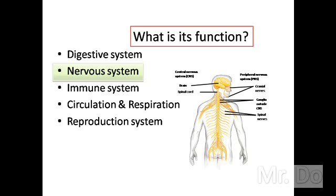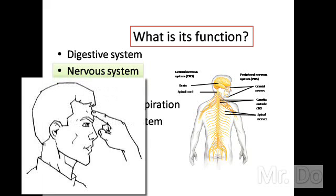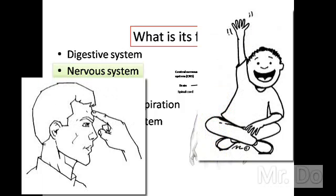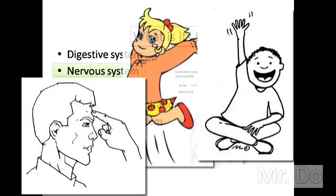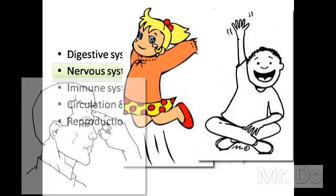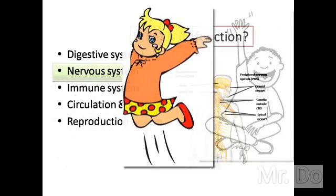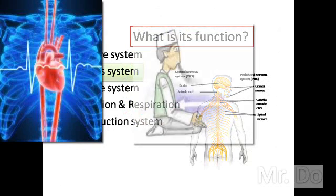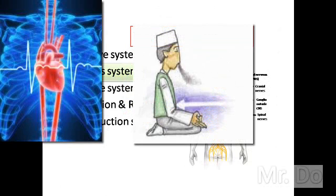The purpose of the nervous system is for you to do things — for example, things that you can control, like thinking, moving, raising your hand, standing up, sitting down, jumping. And then there are things it does by itself, like your heartbeat, breathing, and digesting.